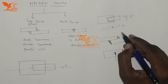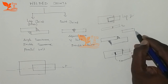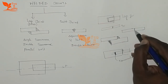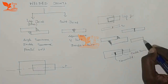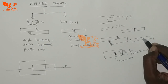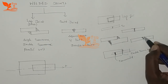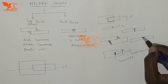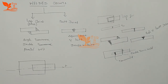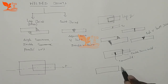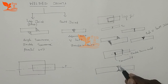For butt joints, we have further sub-classifications: square butt joint, single V butt joint, and double V butt joint. In a square butt joint, plates are placed flat and welded. In a single V butt joint, a V-shaped groove is cut and filled with filler metal. In a double V butt joint, the V-shape groove is cut on both sides of the plate.